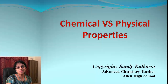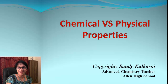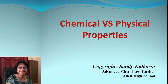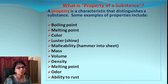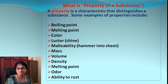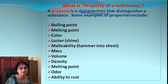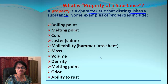Hey kids, Miss Kulkarni here. In this video let's continue studying more things about matter, but mainly we will talk about properties. There are two types of properties: chemical and physical. A property is a characteristic that can easily distinguish or identify a particular substance.